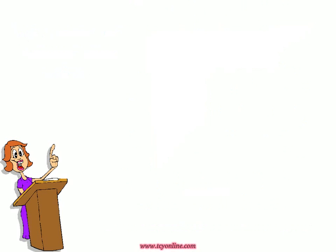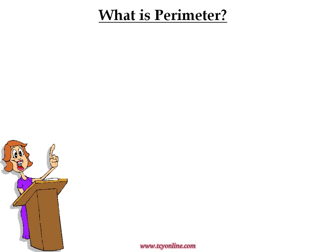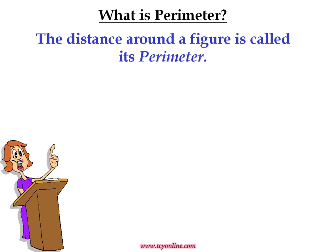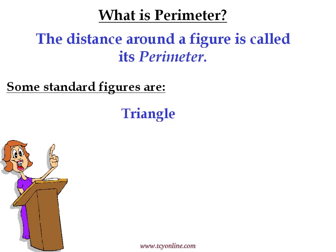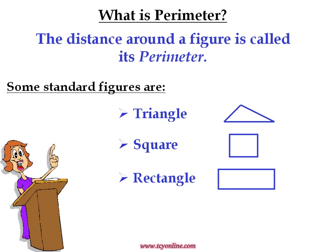Let us revise. Perimeter is the distance around a two-dimensional figure. These figures could be a triangle, a square, a rectangle, a circle, or any other polygon.